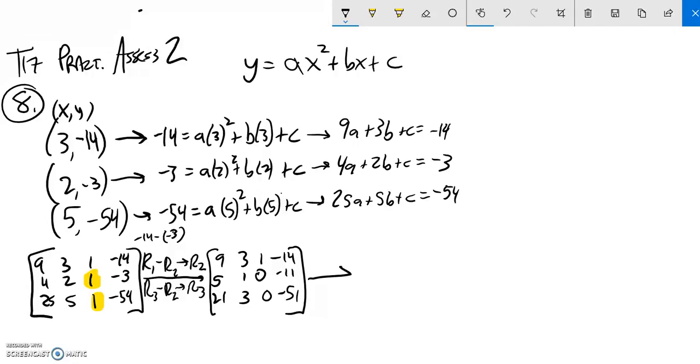So then from here, I think I'll make a 0 here. So I'm going to multiply this second row, row 2, by 3. And then I will subtract it from row 3. So I'm going to go row 3 minus 3 times row 2. Put that into row 3. A little bit of scratch. I'm going to multiply this by 3 just so I have it down here. 15, 3, 0, negative 33.